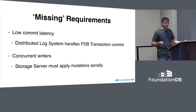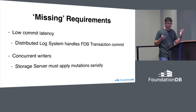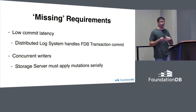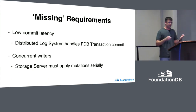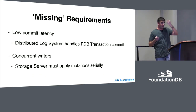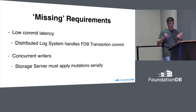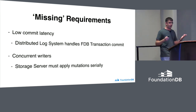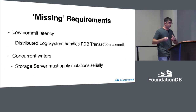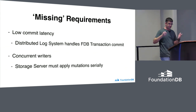Notably missing from this list of requirements is low commit latency, because our distributed log system determines our commit latency and provides durability for FDB transactions when you commit them — the storage engine isn't involved until later. So we can buffer up writes and commit them periodically every couple of seconds. We also don't need concurrent writers because the storage server is going to apply mutations serially, so there's no need to worry about different threads or processes accessing the storage engine.